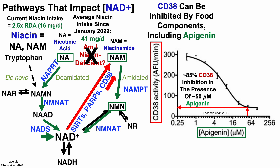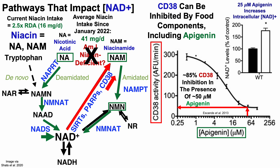We may not need that much apigenin, because in data from that same paper — which will be in the video's description — 25 micromolar apigenin was sufficient to increase intracellular levels of NAD. In cells from mice treated with 25 micromolar apigenin, there was about a 75% increase in NAD levels above control.